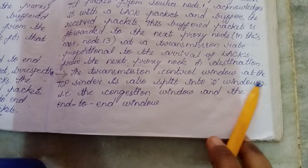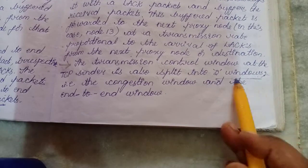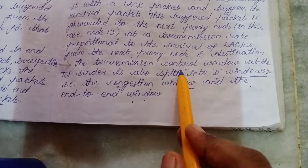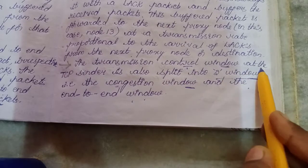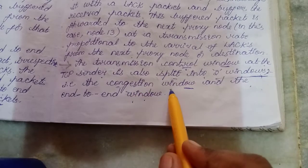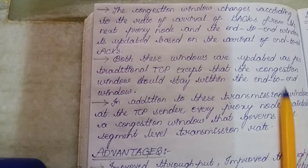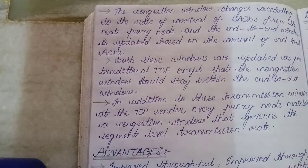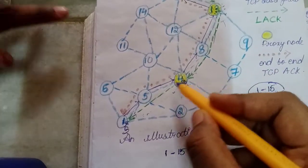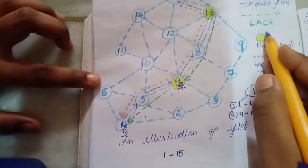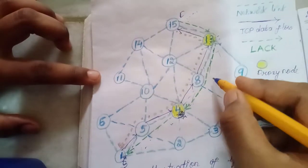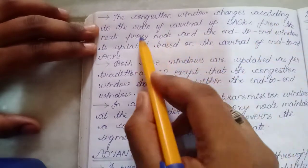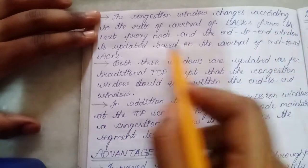The transmission control window at the TCP sender is split into two windows: the congestion window and the end-to-end window. The congestion window changes according to the rate of arrival of LACs from the next proxy node. For example, if the LAC transmission rate from node 4 to node 1 is faster and from node 13 to node 4 is slower, the congestion window changes according to the rate of arrival of local acknowledgement packets from the next proxy node.